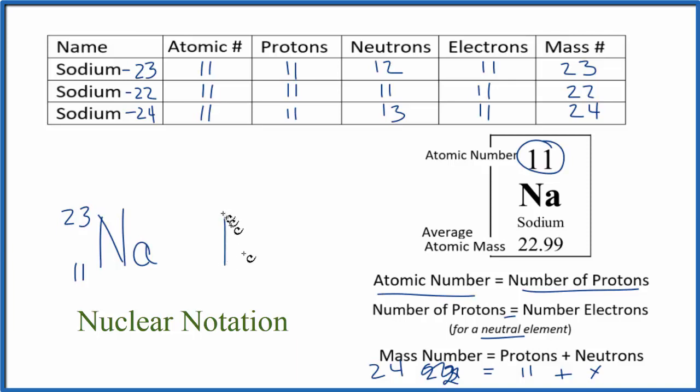If we did sodium-22, that'd be Na. And up here, we'd put the mass number 22. And again, it's sodium, so it has to have an atomic number of 11. Then down here, let's do sodium-24. Na, 24, 11. So that's the nuclear notation. It's another way to write it. This is a specific whole number. This is an average.